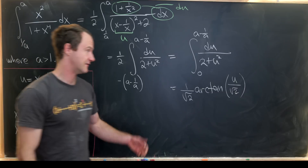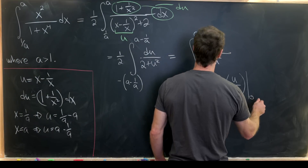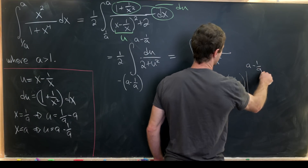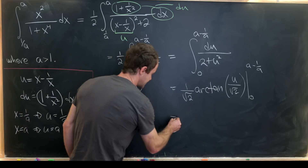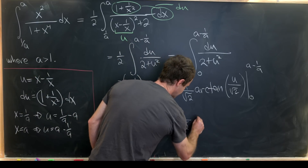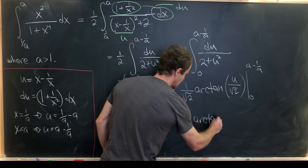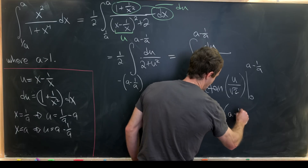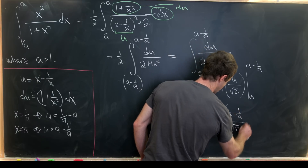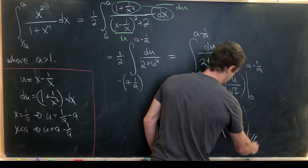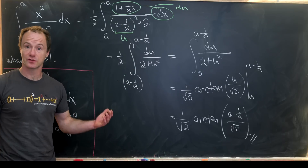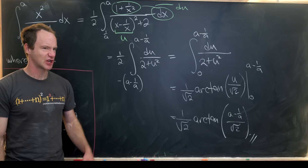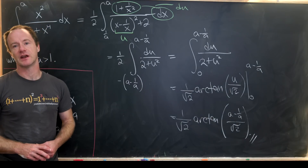We evaluate that from 0 up to a minus 1 over a, and we're done. Our final answer is 1 over the square root of 2 times the inverse tangent of (a minus 1 over a) over the square root of 2. I've done a lot of other interesting integrals on the channel — if you'd like to check one out, there should be one on the screen right now. And that's a good place to stop.